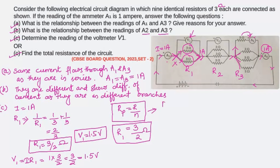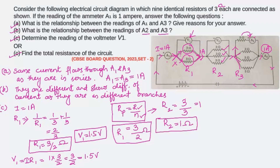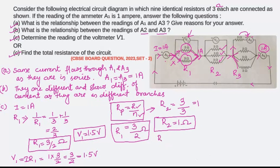Similarly for R2: using R_p = R/n, R is 3 ohm and there are 3 resistors, so R2 = 3/3 = 1 ohm. For R3: R is 3 ohm and there are 4 resistors, so R3 = 3/4 ohm. This formula saves a lot of time compared to taking reciprocals individually.